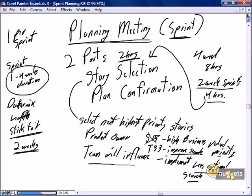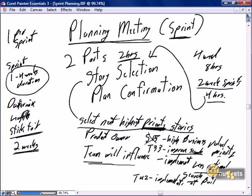We'll talk more about technology debt later in the series. The sprint planning meeting is where we select the next highest priority stories, where the priority may be business priority or the project team's priority to remove technology debt, improve process, or implement technology. For example, team story 42 might be the implementation of a new build server. The implementation of new technology into the project environment also becomes a story selected as part of the sprint planning meeting.